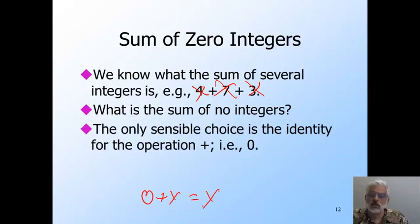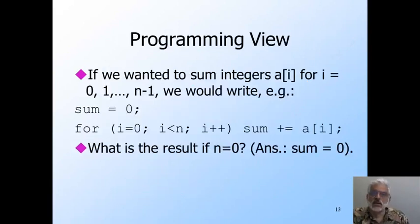This is a well accepted convention. I can't prove to you that the sum of 0 things must be the identity 0, but neither have I seen a reasonable justification for any other convention. And if you have one, it would be a great topic for the discussion forum of the class. And it is natural and intuitive, as we can see, if we write the obvious code to sum the n elements of an array.